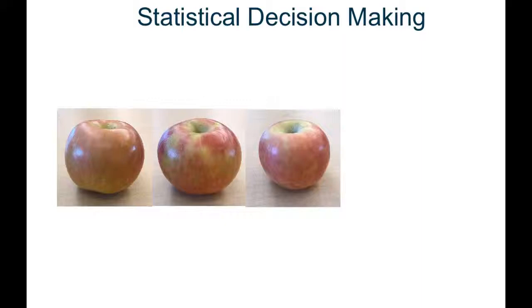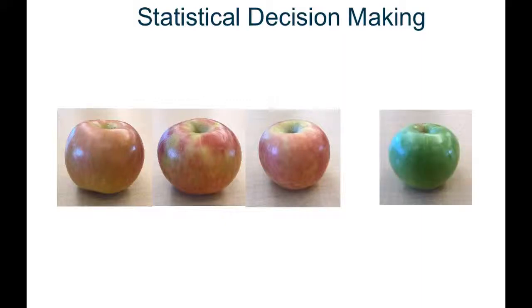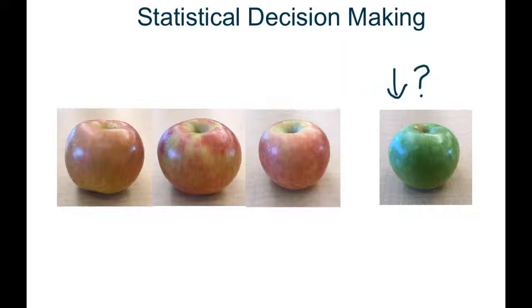Here's a research question: did the apple I just put up on the screen come from the same population as the three apples on the left? From a research perspective, we have our hypotheses. The null hypothesis is that this apple came from this population and the only difference is due to individual variability. Our research hypothesis is that it came from a different population — a different type of apple or different population of apple trees.